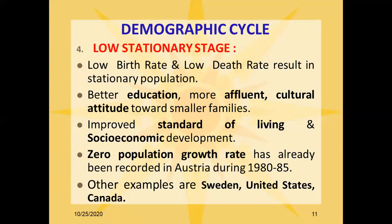The fourth stage is the low stationary stage, in which low birth rate and low death rate result in a stationary population. Better education, more affluent cultural attitudes towards smaller families, nuclear families, improved standard of living, and socio-economic development characterize this stage. Zero growth rate was already recorded in Austria during 1980 to 1985. Other examples are Sweden, United States, and Canada.